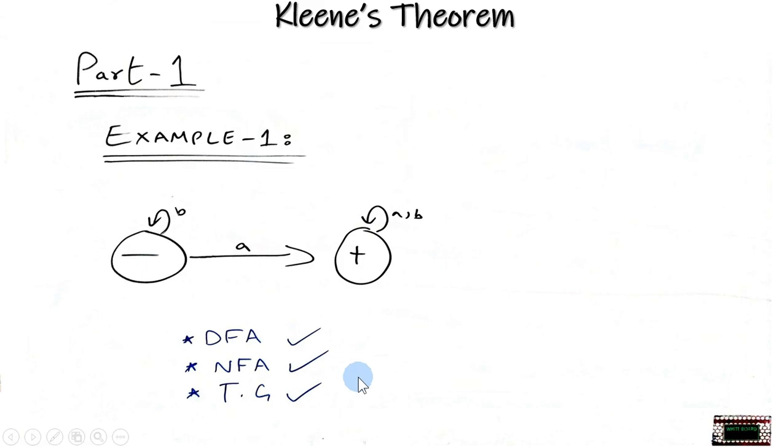These examples are just for understanding Kleene's theorem part 1. In this example we have drawn a finite automata of this language. This is our deterministic finite automata, which means DFA. But it is also an NFA at default because it is not breaking any rules. And it is also a TG.